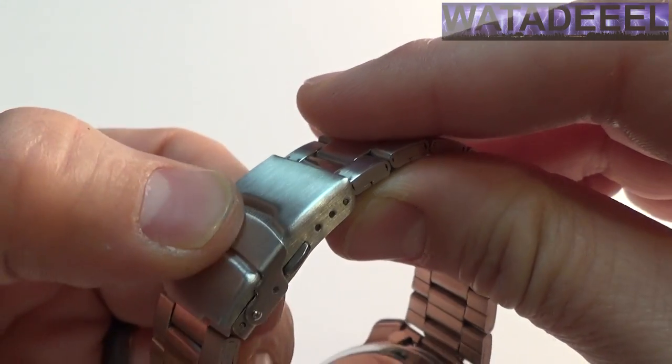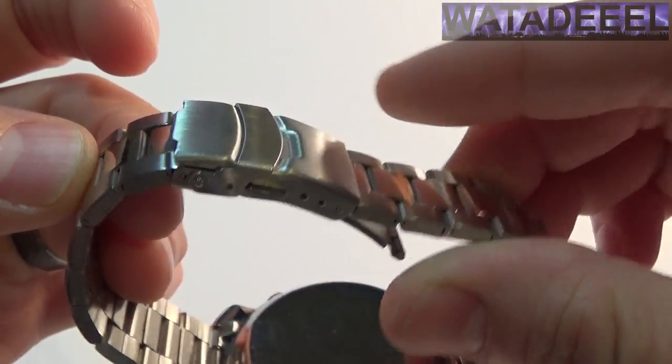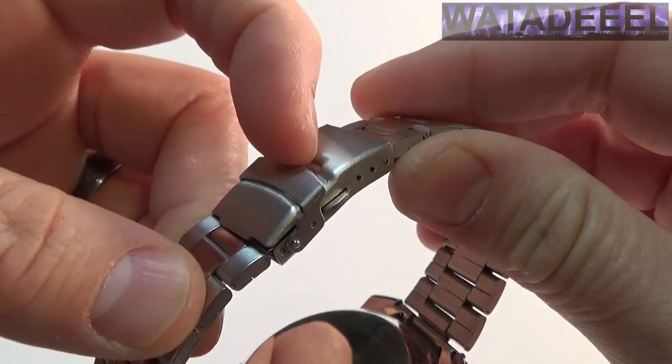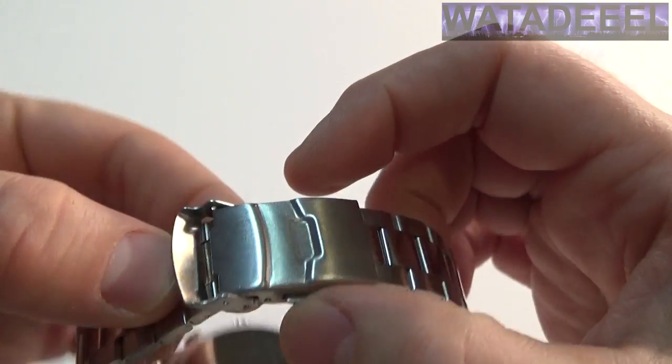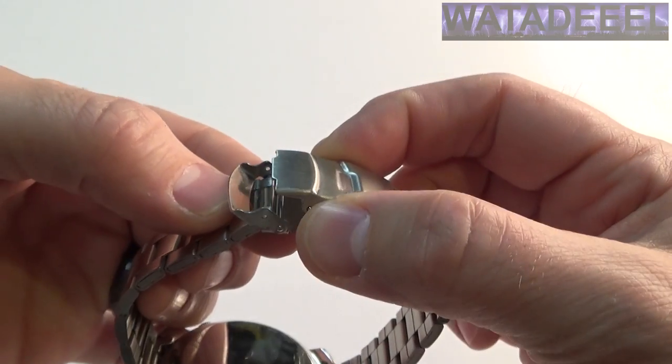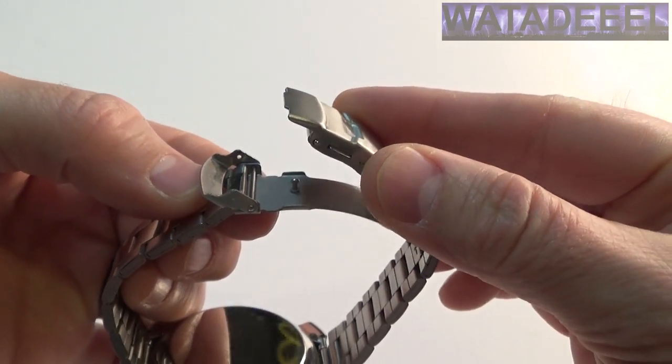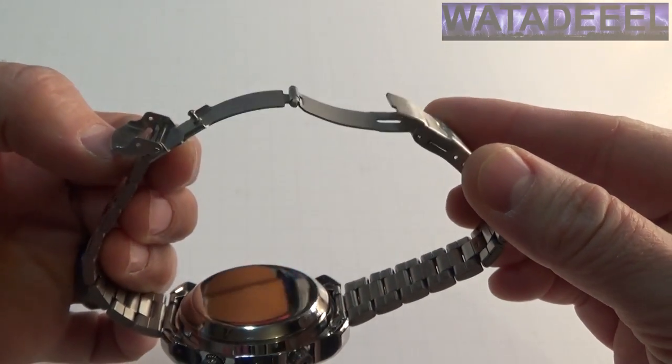So this hinge is down and it locks and it keeps this thing from coming open. So once you get that loose, then you press in on these tabs and that releases the watch band.